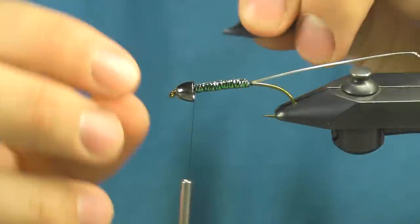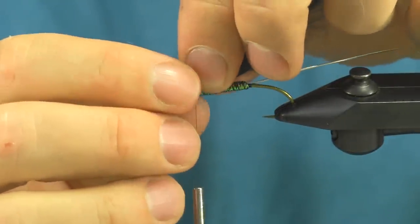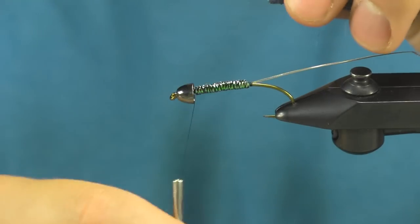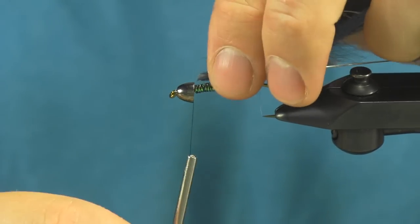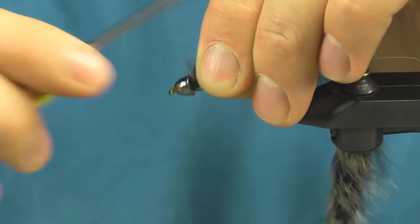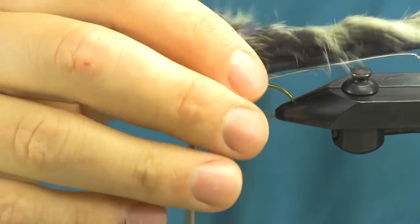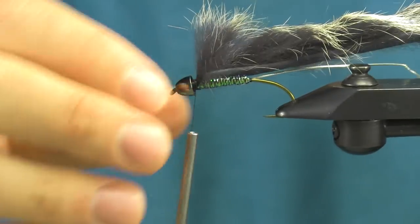Here I'm going to tie this right in underneath that cone head as tight and as far up as I can possibly get it. You want to make sure that stays right in line with the top of your hook shank there.